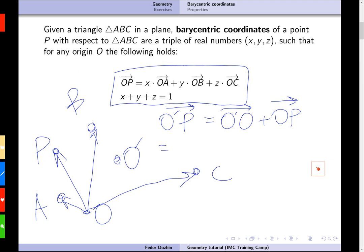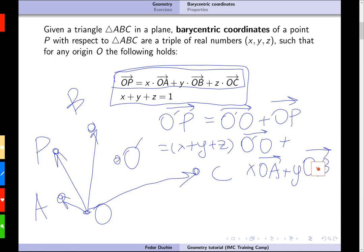This is basically the definition of vector addition. Okay, so then we have O prime O. So we can just introduce X plus Y plus Z here because X plus Y plus Z is one. O prime O plus and O P. For O P, we have our expression from our barycentric coordinates. So this is going to be X O A plus Y O B plus Z O C.